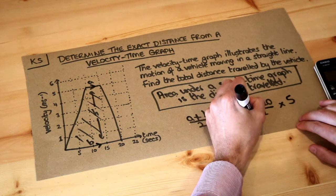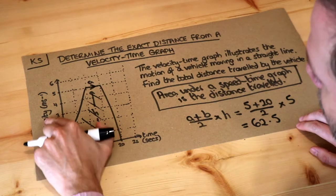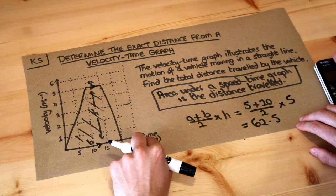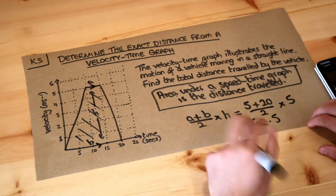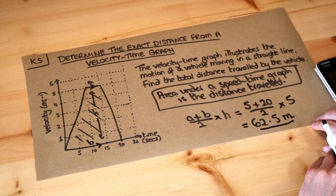...that gives you 62.5. And what's the unit? Well this velocity is in metres per second and the times in seconds so therefore the distance is going to be in metres to be consistent with that unit of speed that we're using.